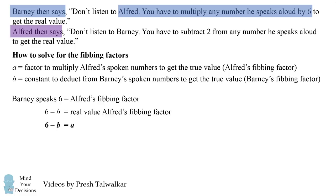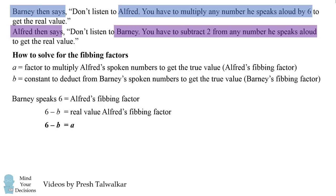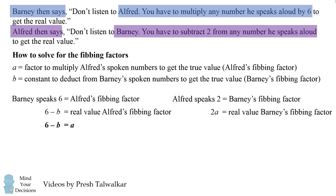Now Alfred says that Barney's fibbing factor is two. So if Alfred speaks that two equals Barney's fibbing factor, we have to modify that number two. So we have two times A is the real value for Barney's fibbing factor. Therefore, two A equals B, which is Barney's fibbing factor.